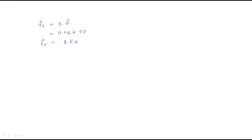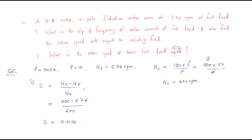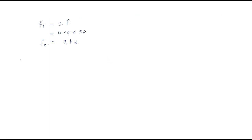The second question asks for the rotor speed at twice the full load slip. The new slip s2 is two times the full load slip. Full load slip is 0.04, so the new slip becomes 0.08. Now we need to find the new rotor speed.